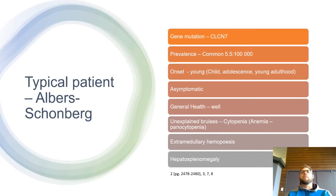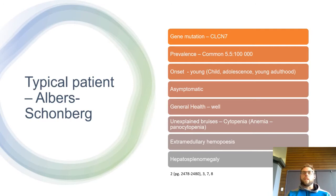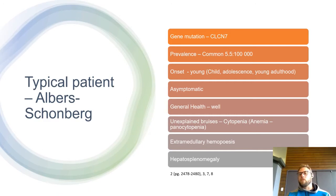The CLCN7 gene directs CLC-7 channels, whose job is to regulate pH within the osteoclast cell. They do this by a 2:1 exchange — for every two negative chloride ions exiting the cell, one positive ion enters — regulating the pH and acidity so the osteoclast can dissolve bone tissue as it should. Because this process is disrupted, there is a thickening or sclerosis of the bone.